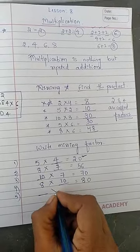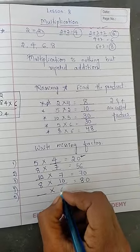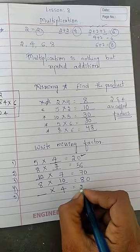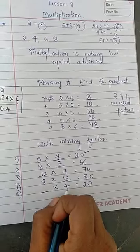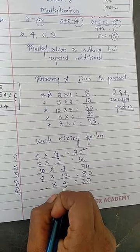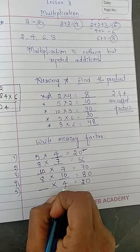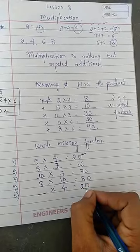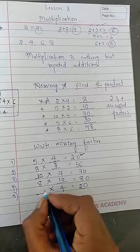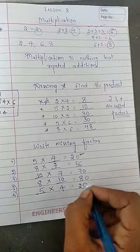One more we will see. Dash into 4 is equals to 20. Go on reading 4 table. 4 ones is 4, 4 twos is 8, 4 threes is 12, 4 fours is 16, 4 fives is 20. I got 20. 20 is there here.